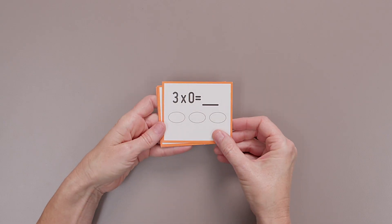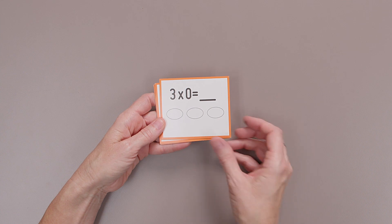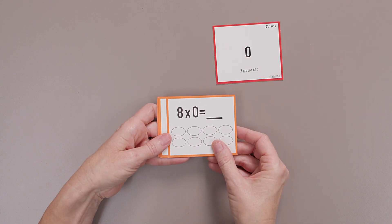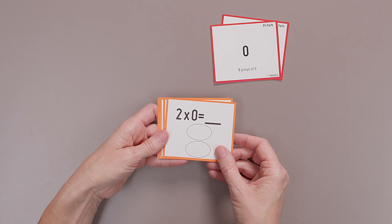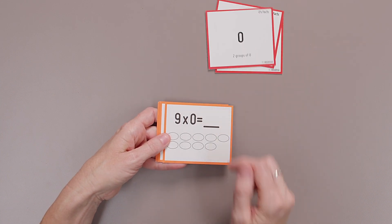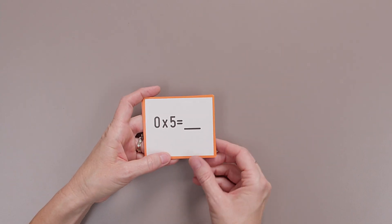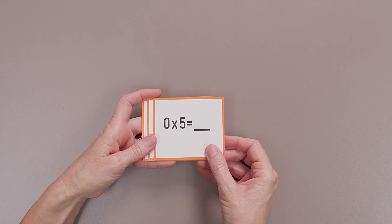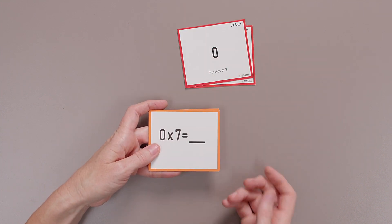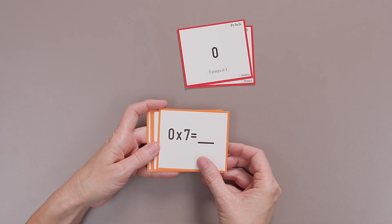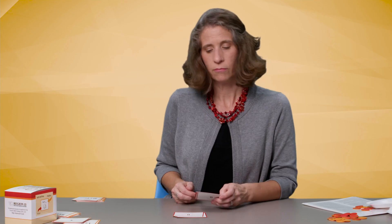Great. How about zeros? Think about those zeros. Three times zero. Three groups of zero. Zero. Eight times zero. Zero. Two times zero. Zero. Oh, y'all are getting good at this. Zero times five. That's zero groups of five. Zero. Zero times three. Zero. Zero times seven. Zero. Excellent.